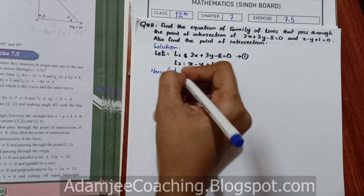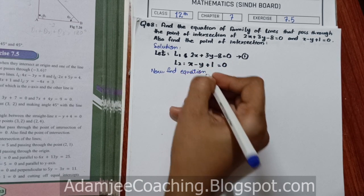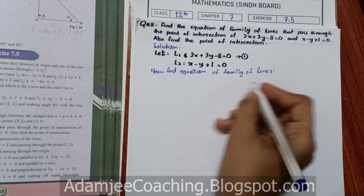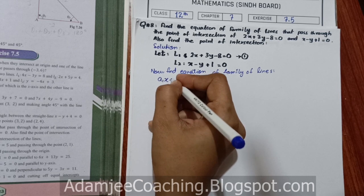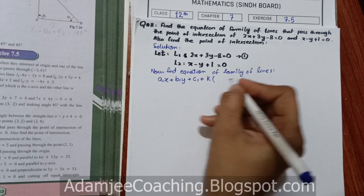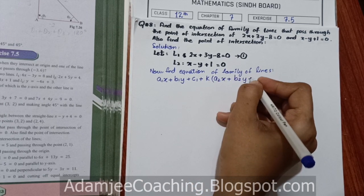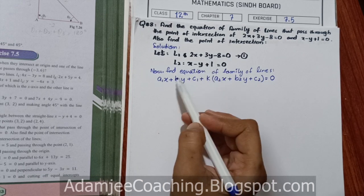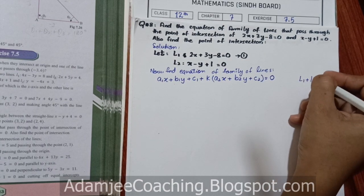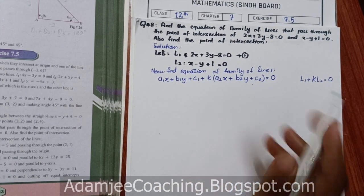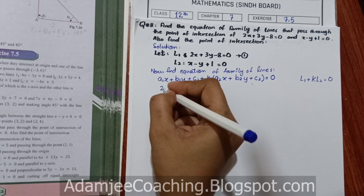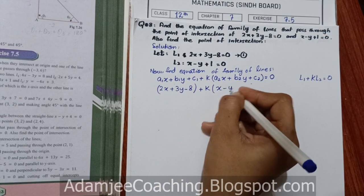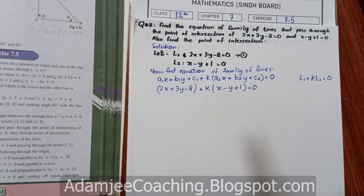Now we find the equation of the family of lines. We know the formula: a1x plus b1y plus c1 plus k(a2x plus b2y plus c2) equals to 0. Here L1 and L2 are present, so simply we write it as L1 plus k·L2 equals to 0. Substituting: 2x plus 3y minus 8 plus k(x minus y plus 1) equals to 0. This is the equation of the family of lines.